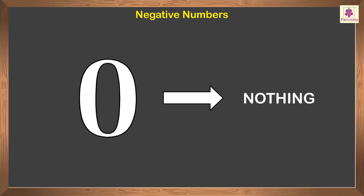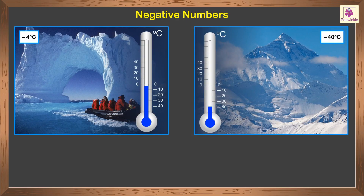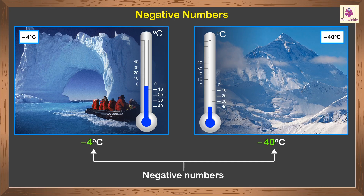Negative numbers: let us first understand what negative numbers are. We know that zero means nothing, but there are instances in real life when we use numbers that are less than zero. For example, in a few cold regions in the world, the temperature goes below zero degrees Celsius — that is, negative four degrees Celsius or even below negative 40 degrees Celsius.